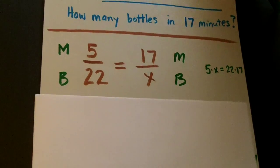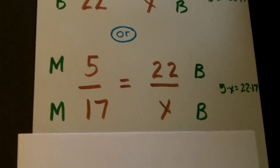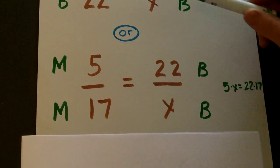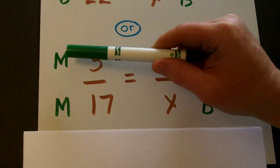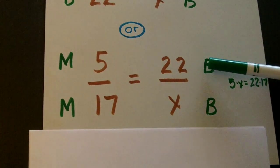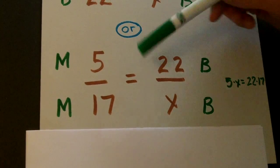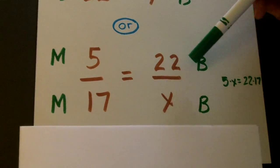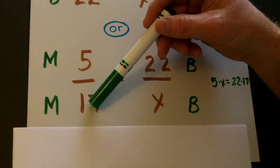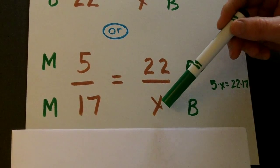Now we could also write it like this. Instead of the minutes both on top, the minutes can be on the left and the bottles on the right. Five minutes produces 22 bottles, 17 minutes produces how many bottles?